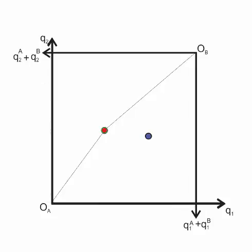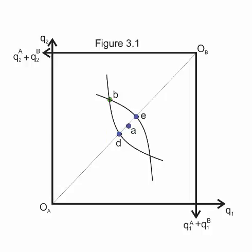The question in welfare analysis then is how can we compare that to some other point? Let's say the blue dot over there to the right. Is that better? Is that worse? Is there any way that we can rank those two allocations? This is what they do in figure 3.1 in Just, Hueth, and Schmitz. We have an Edgeworth box.